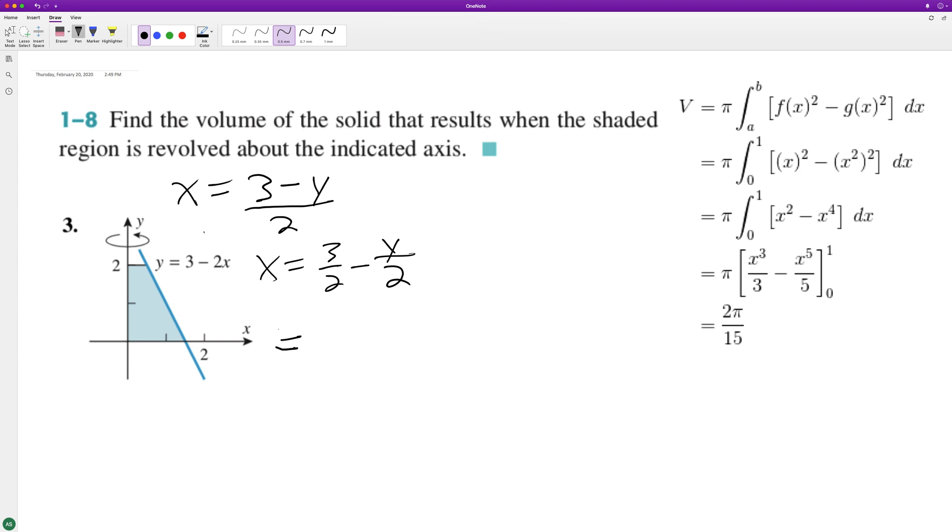So to use the washer method, we have pi times 3 halves minus y over 2 squared.